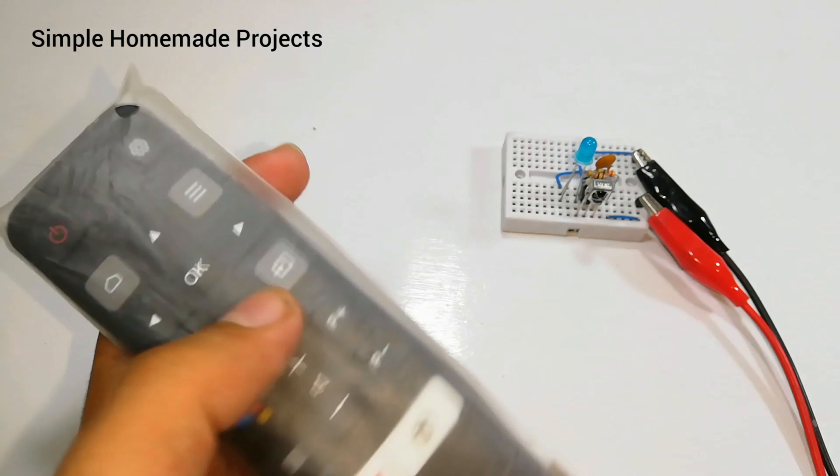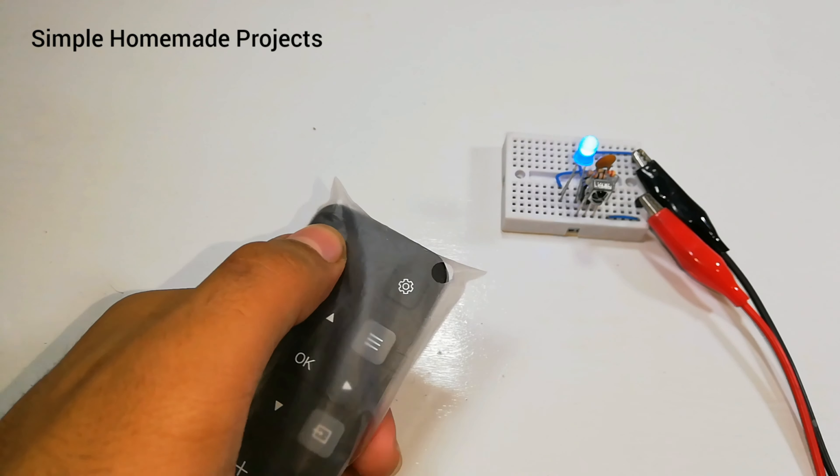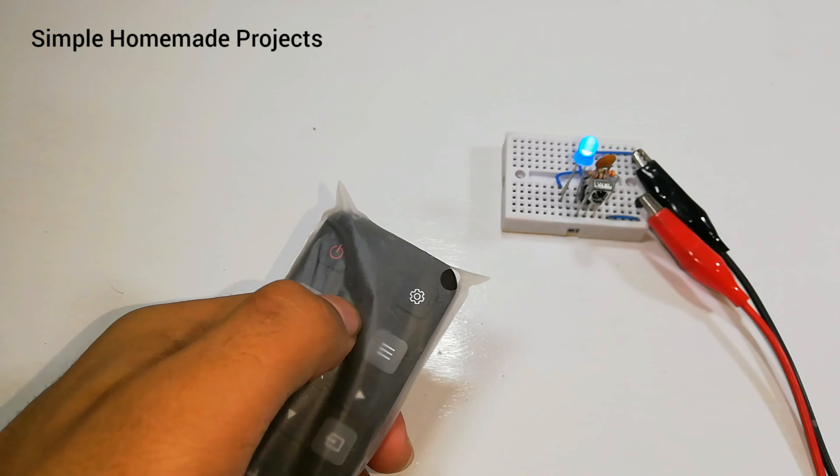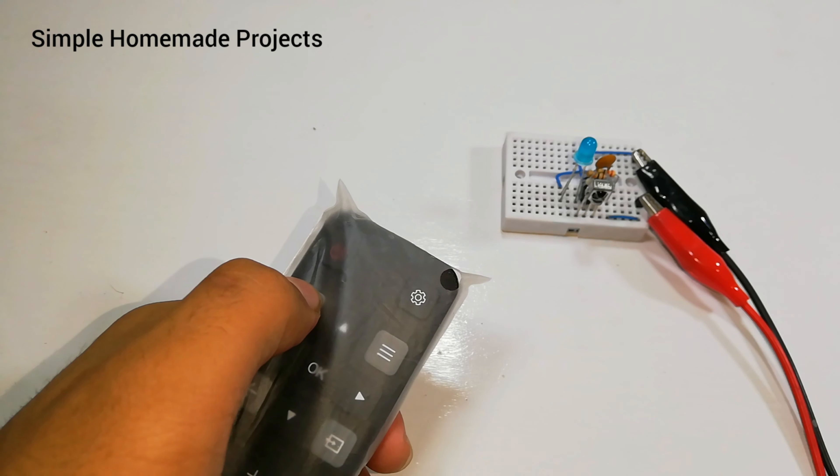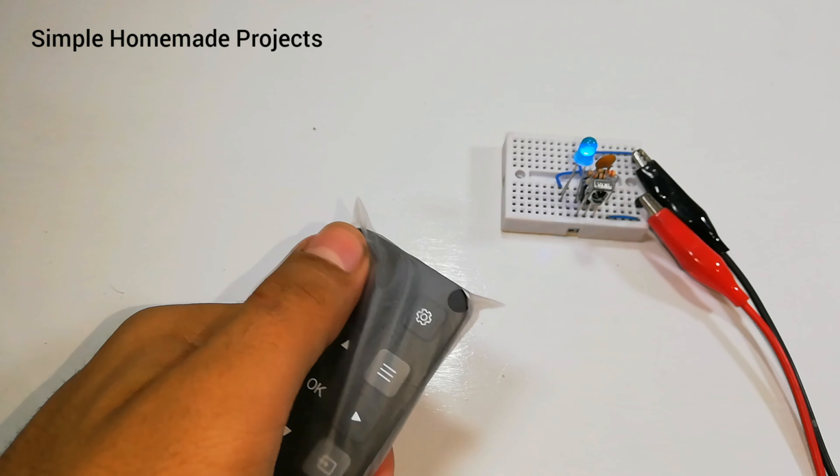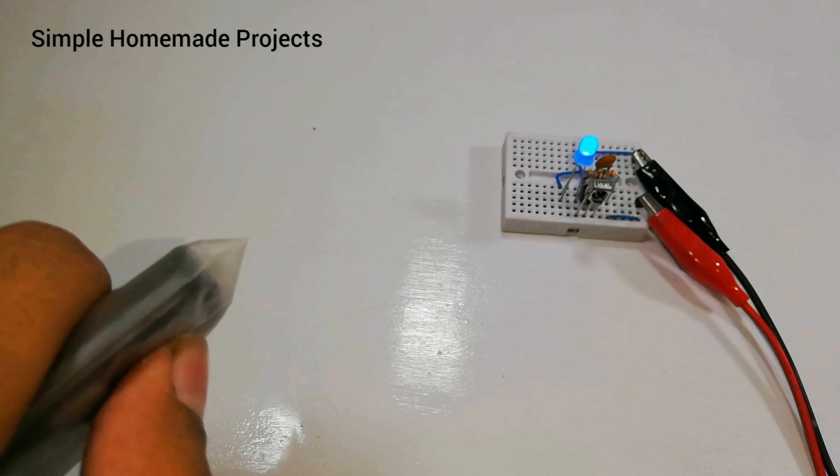Here I have a TV remote and you can clearly see the results. It is a universal circuit so you can test any infrared device with the circuit. You can also add a buzzer with LED if you want a beeping sound for indication at the output.